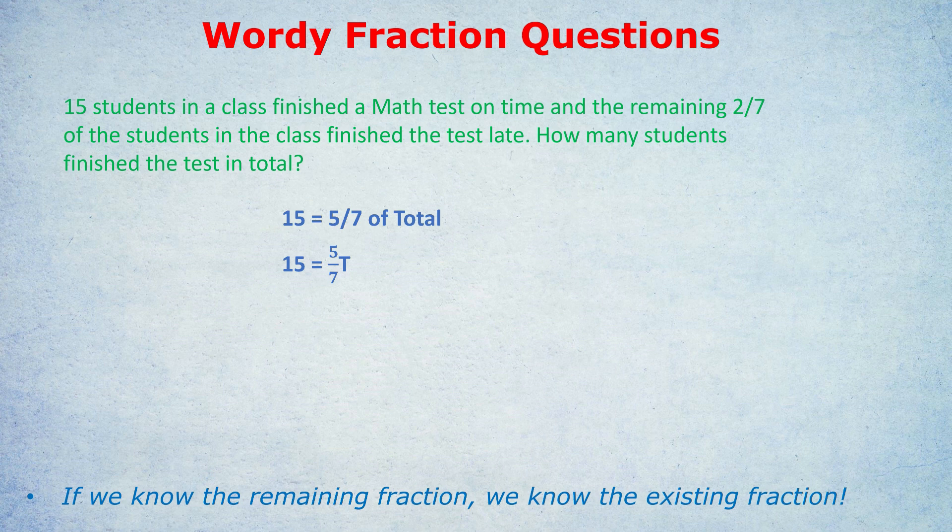Now, first priority, let's get rid of the fraction. How would we do that? By multiplying both sides by the denominator. Multiply both sides here by seven, and you get 105 equals 5t. And now we can simply divide by five to find out what t, which is the total, was.